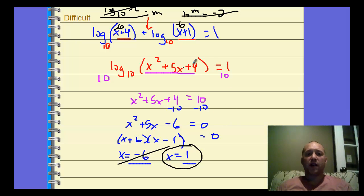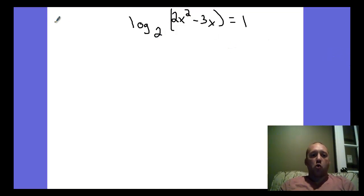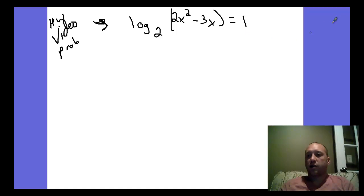For logs, it's pretty simple: if your x value causes you to take the log of a negative, it won't work — it's extraneous. So we still need to check. Before I let you go, I'll give you your homework problem. Go through your inverse rules to solve it, be careful with it, and see how you do.